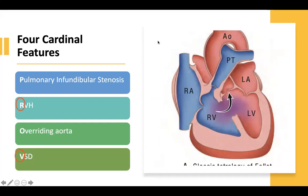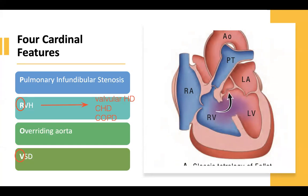The next thing the examiner can easily swap is the RVH. Always remember: if it is a valvular heart disease, congenital heart disease, or COPD, this will lead to right ventricular hypertrophy. What enlarges in systemic hypertension? It's the left ventricle. But with long-standing valvular heart disease, congenital heart disease, or COPD, it's the right ventricle that enlarges.